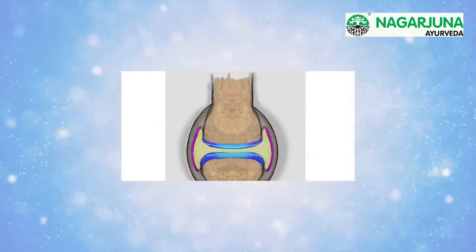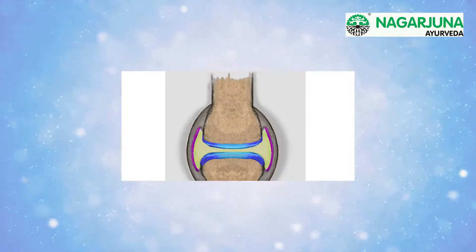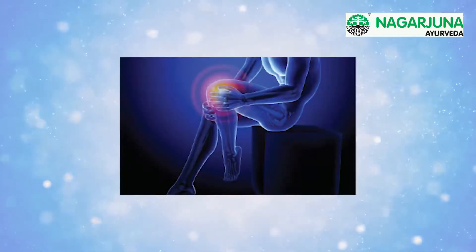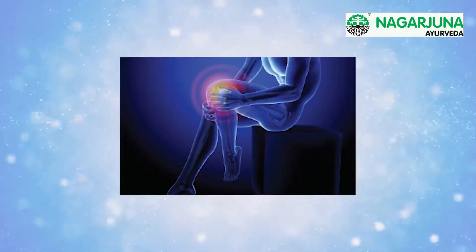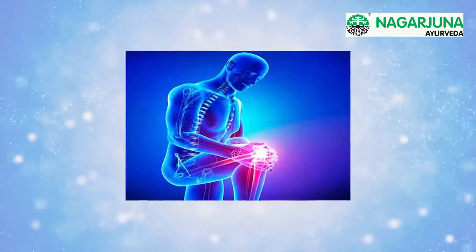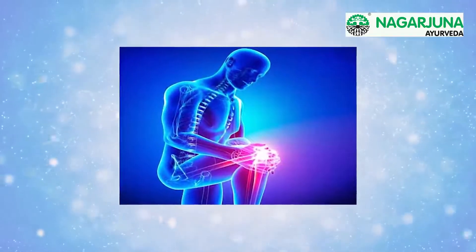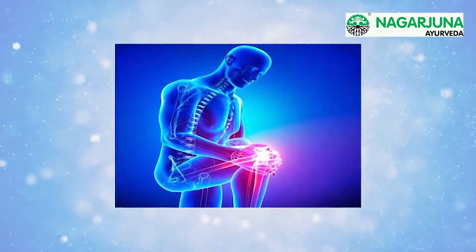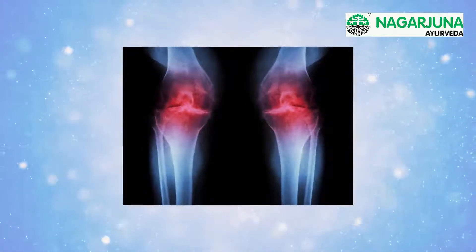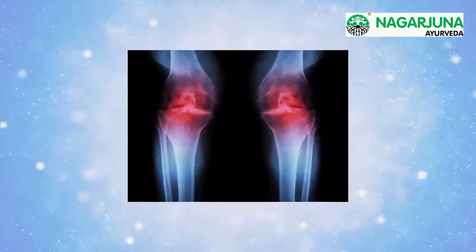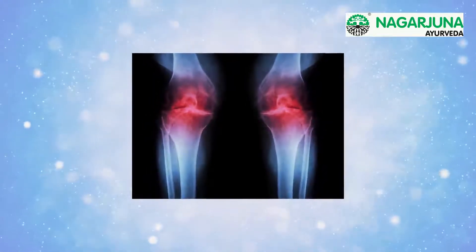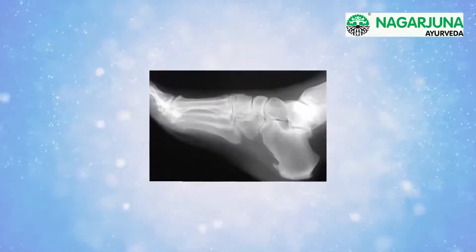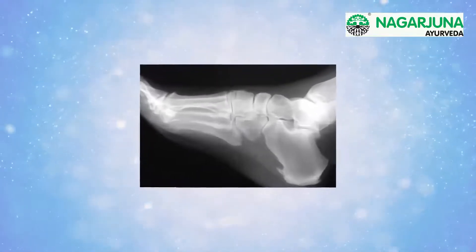As the cartilage wears away, it becomes frayed and rough, and the protective space between the bones decreases. This can result in bone rubbing on bone and produce painful bone spurs. Osteoarthritis develops slowly and the pain it causes worsens over time. Bone spurs are a common feature of this form of arthritis.